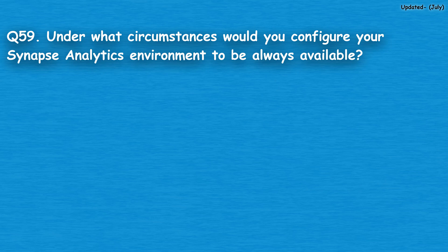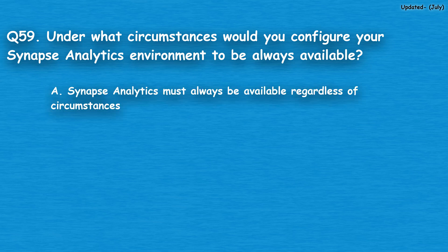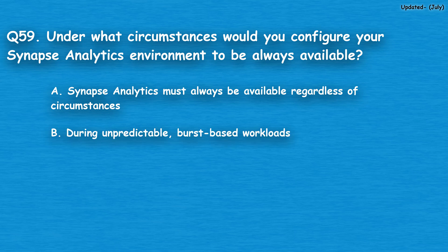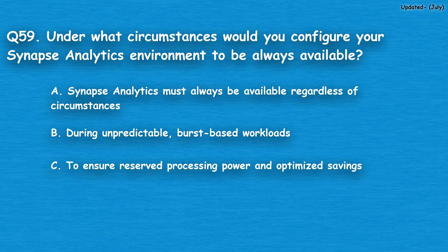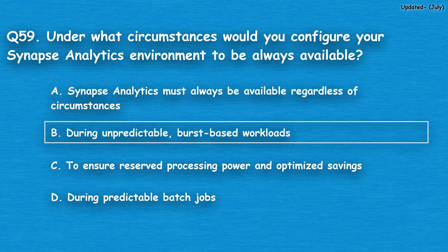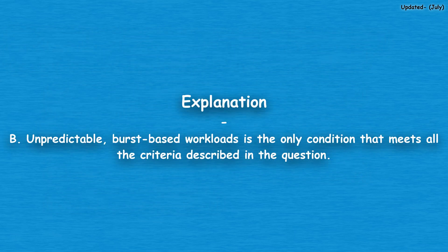Question number 59: Under what circumstances would you configure your Synapse Analytics environment to be always available? Option A: Synapse Analytics must always be available regardless of circumstances. Option B: during unpredictable, burst-based workloads. Option C: to ensure reserved processing power and optimized savings. Option D: during predictable batch jobs. The correct answer is option B, during unpredictable, burst-based workloads. This is the only condition that meets all the criteria described in the question.